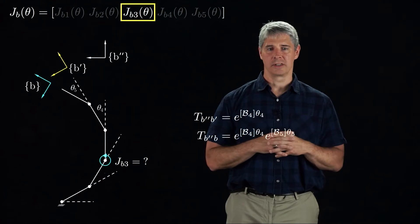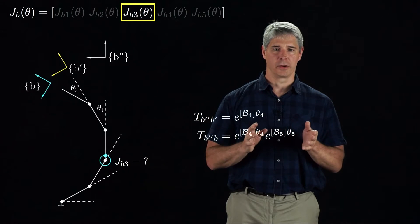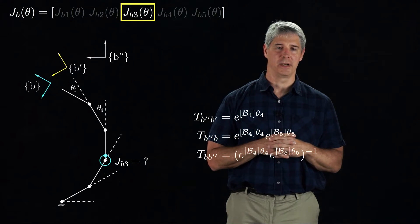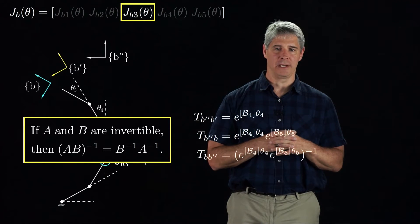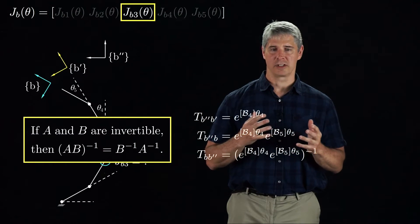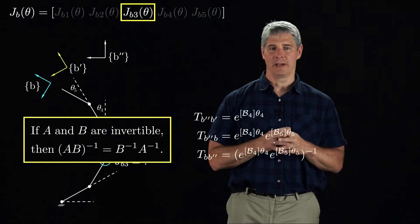What we really want, though, is the configuration of the B'' frame relative to the B frame, so we reverse the subscripts, which is the same as taking the inverse of the transformation matrix. Making use of the fact that the inverse of A times B, where A and B are invertible matrices, is just B inverse times A inverse, we can write TbB'' in this form.